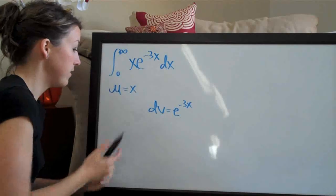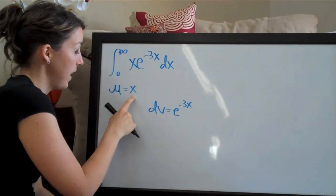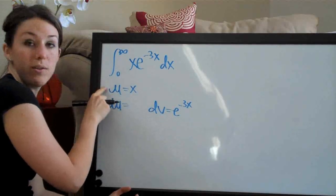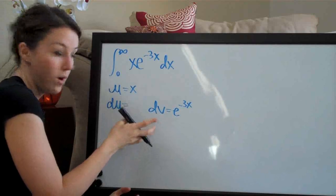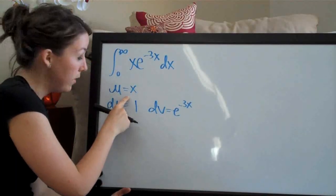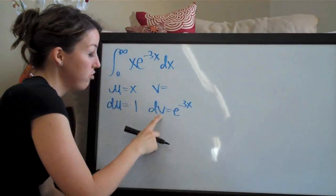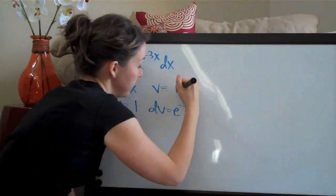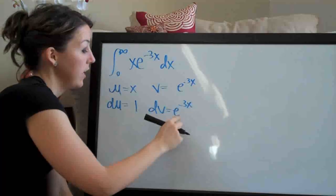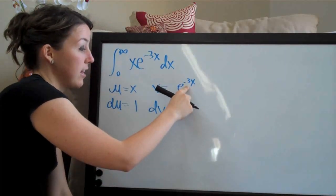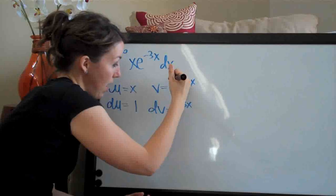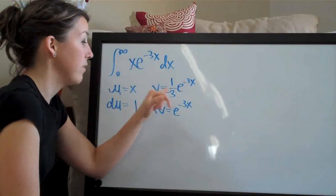The reason we assign u to x rather than the other way around is that when we take the derivative of u, this term gets simpler. The derivative of x is 1, so du equals 1. Then we take the integral of dv to get v. When integrating something with e, the exponent always stays the same — it stays e to the negative 3x — and we divide by the coefficient on the exponent, which is negative 3. So v equals negative one-third e to the negative 3x.